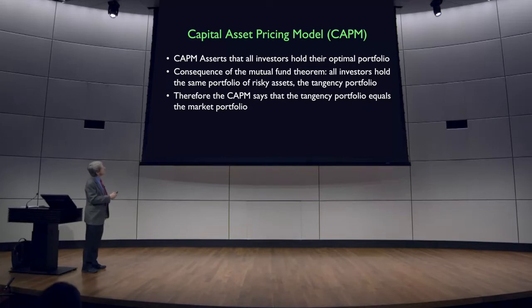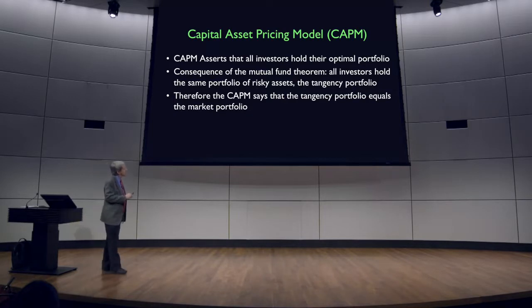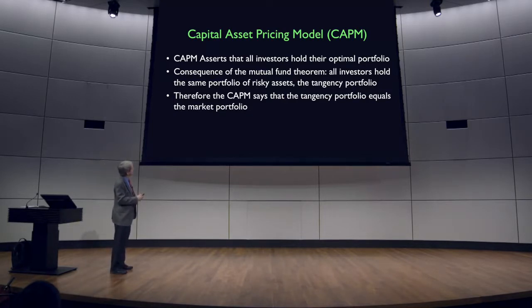The Capital Asset Pricing Model is a model of the optimal portfolio. It asserts that all investors will hold the optimal portfolio.